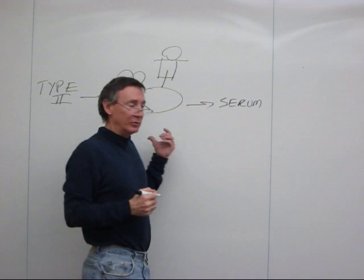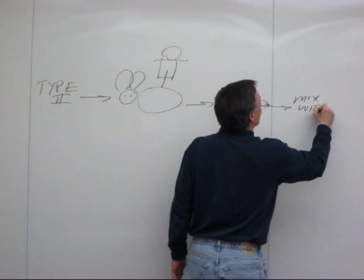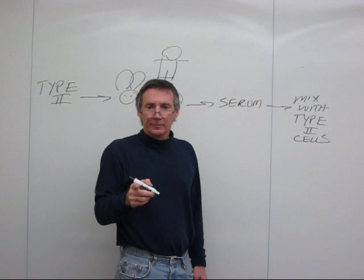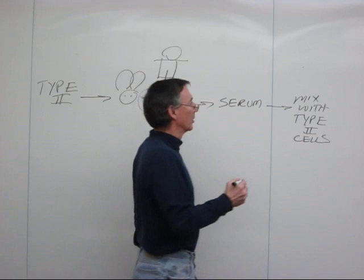That serum now contains antibodies against type 2 Streptococcus. If you mix that serum with type 2 cells, the antibodies in the serum will bind to the cells, and what happens is this is a visible response as the cells clump up or agglutinate.